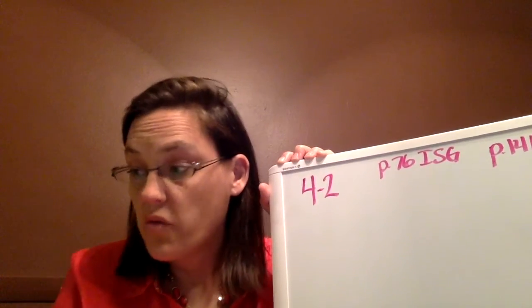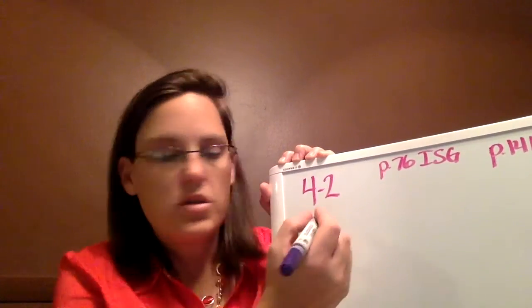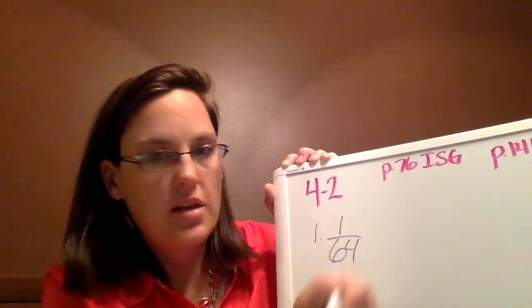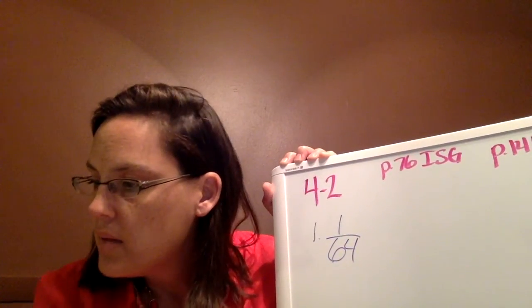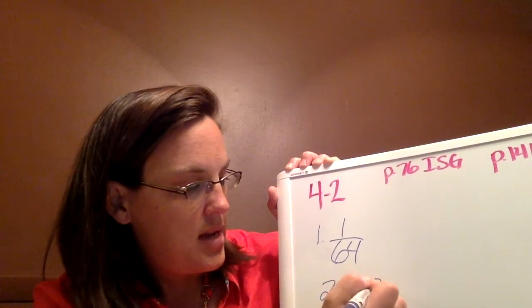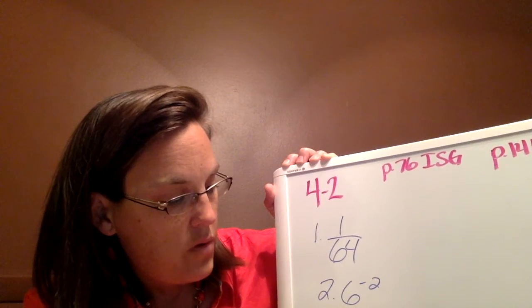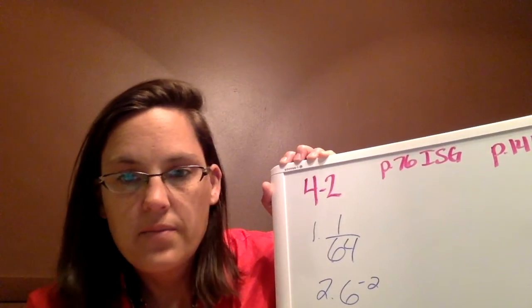But number 1 is 4 to the negative third power. So that is 1 over 36.